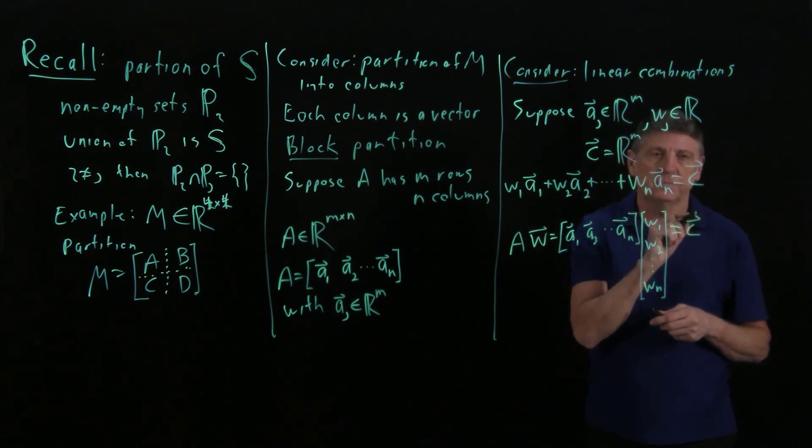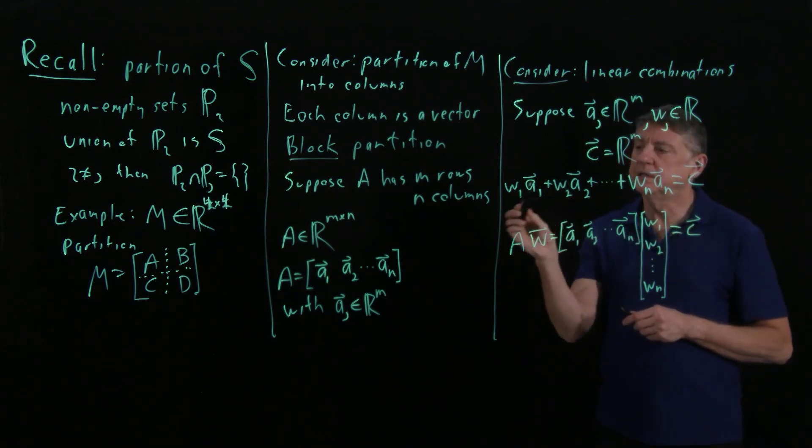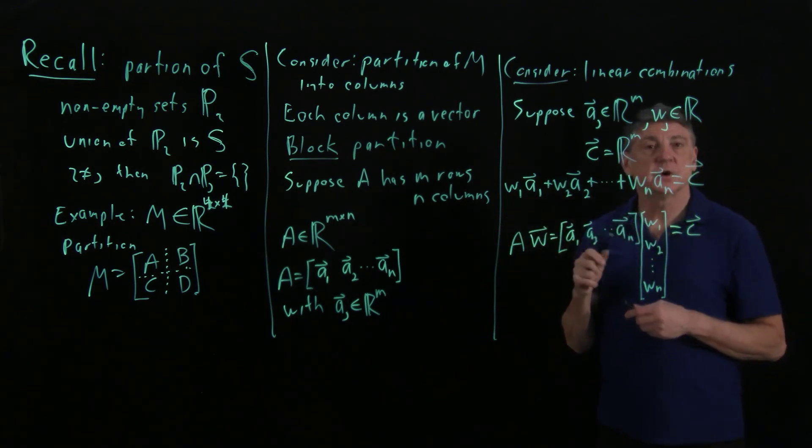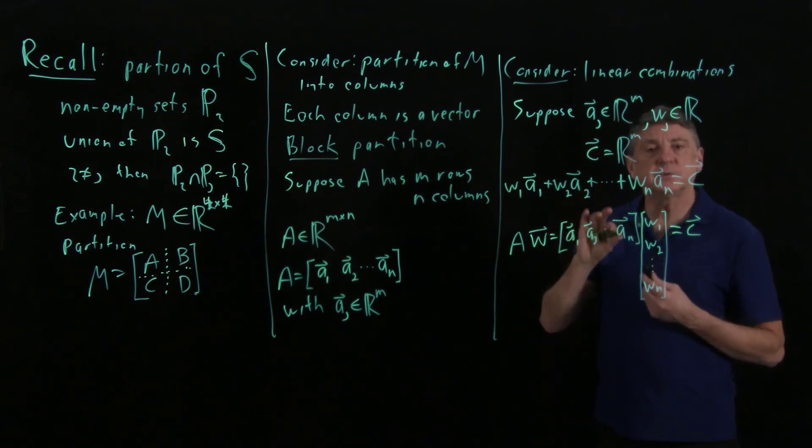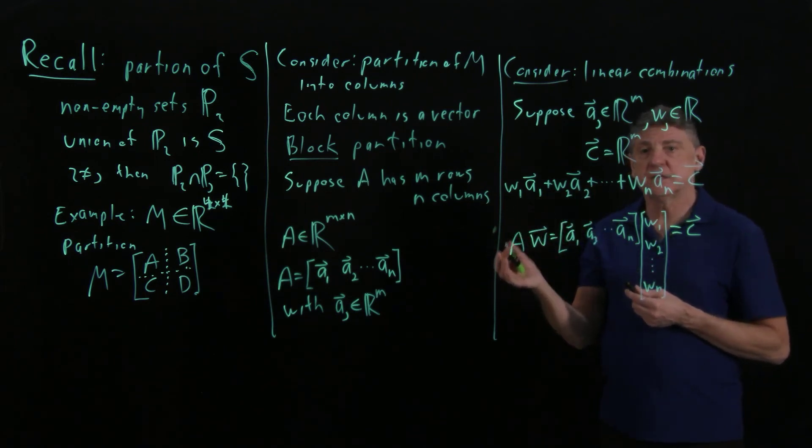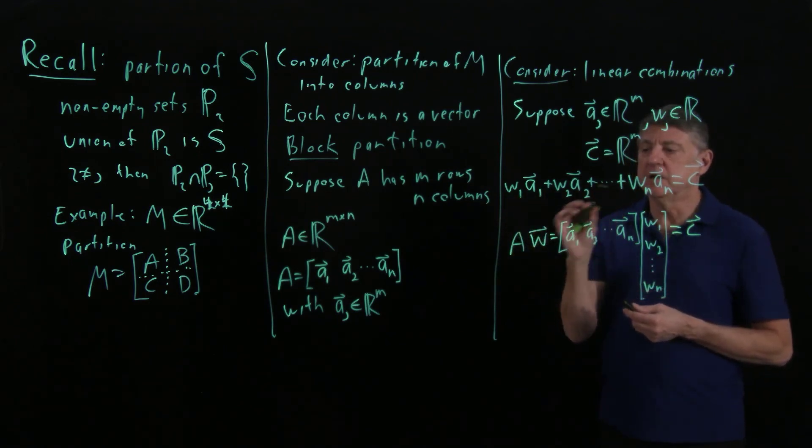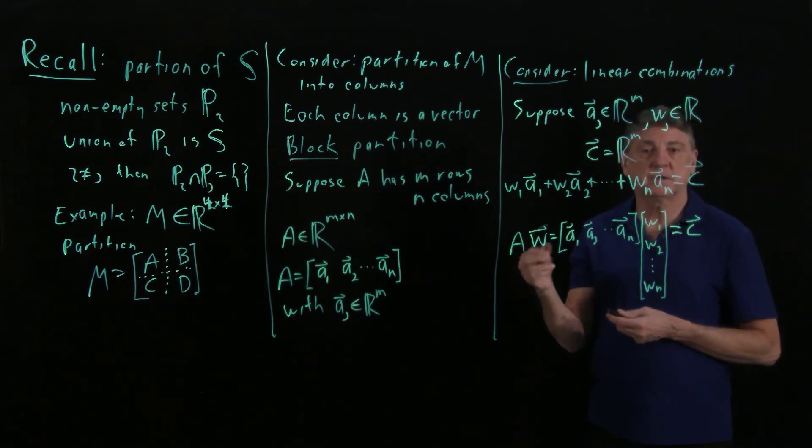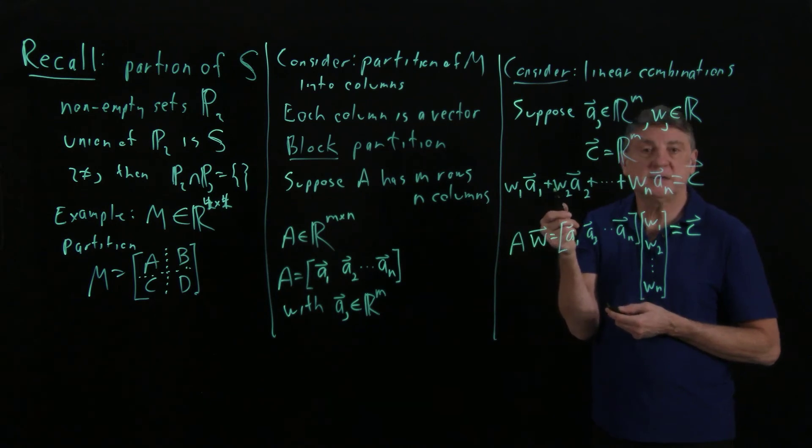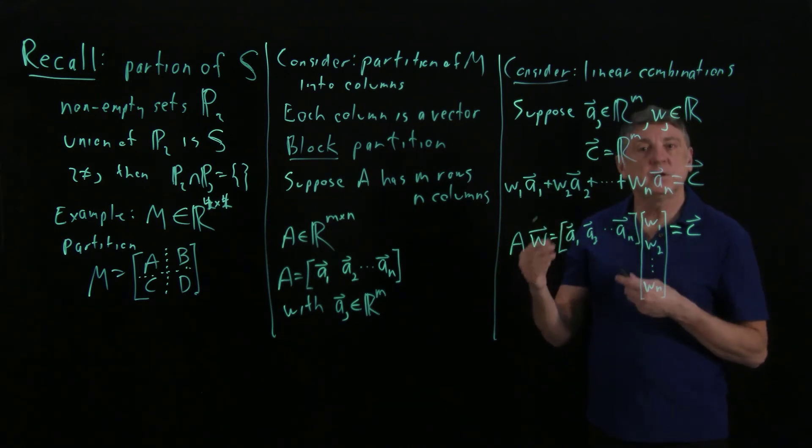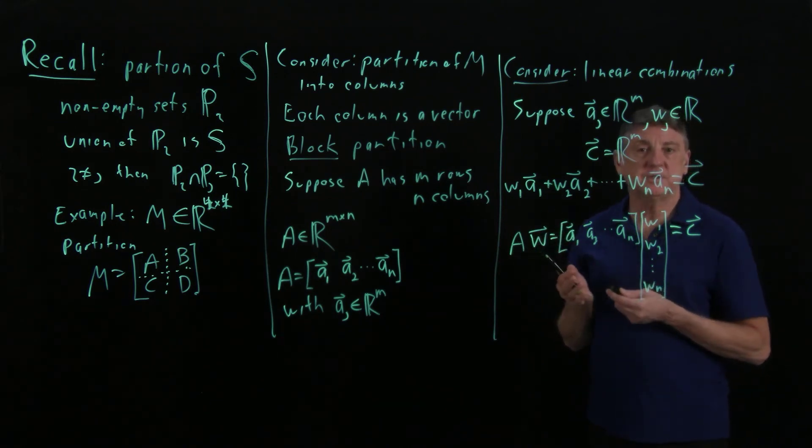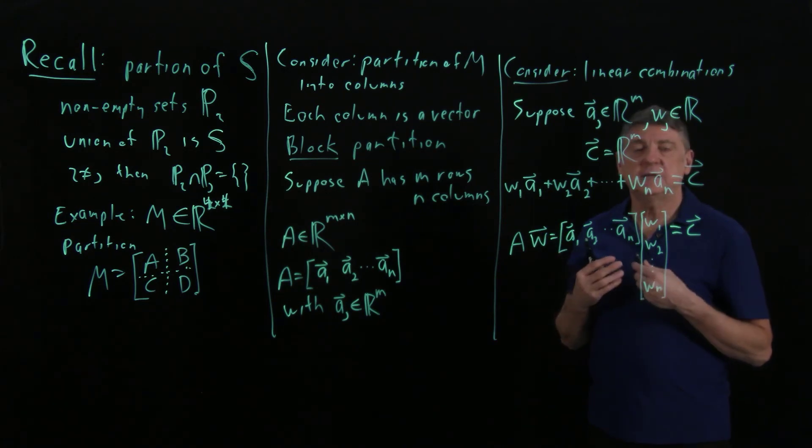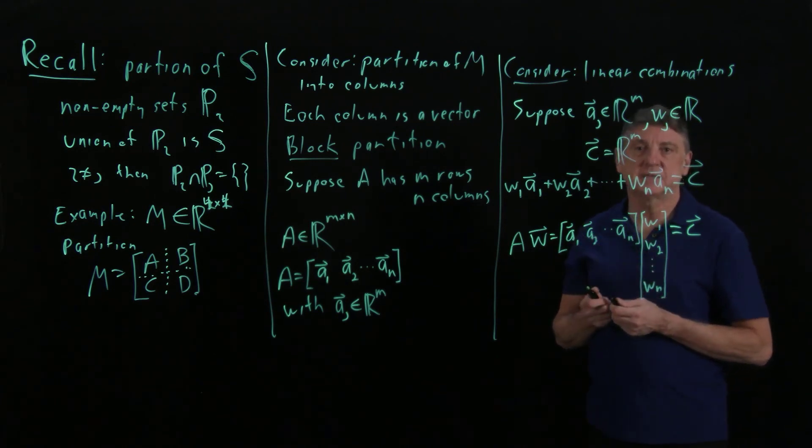And so when we're dealing with linear combinations, one of the things that we can do is we can flip representations. If we have a linear combination, we can think of that as being a matrix vector product. When we have a matrix vector product, we can think of that as being a linear combination. And we'll flip back and forth between these two representations so that we can solve our problems more efficiently and get a better understanding of vectors and the spaces that they live in.